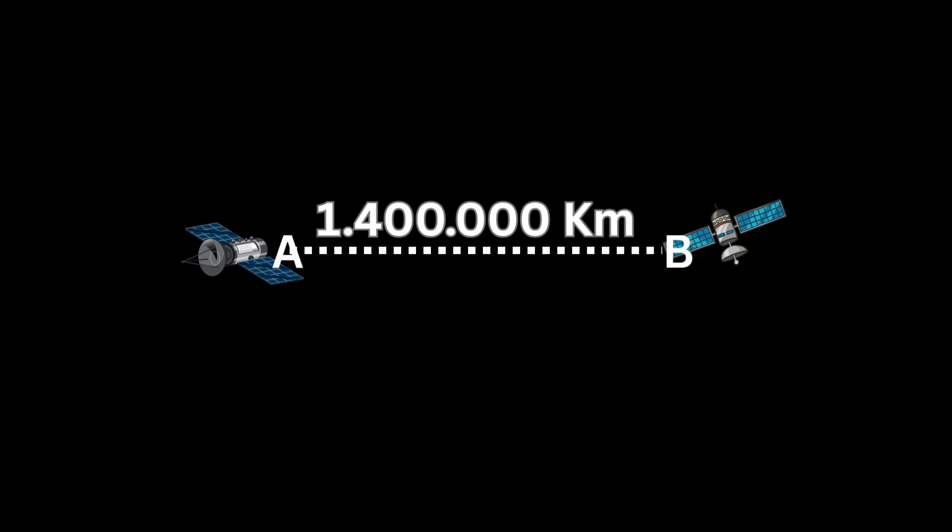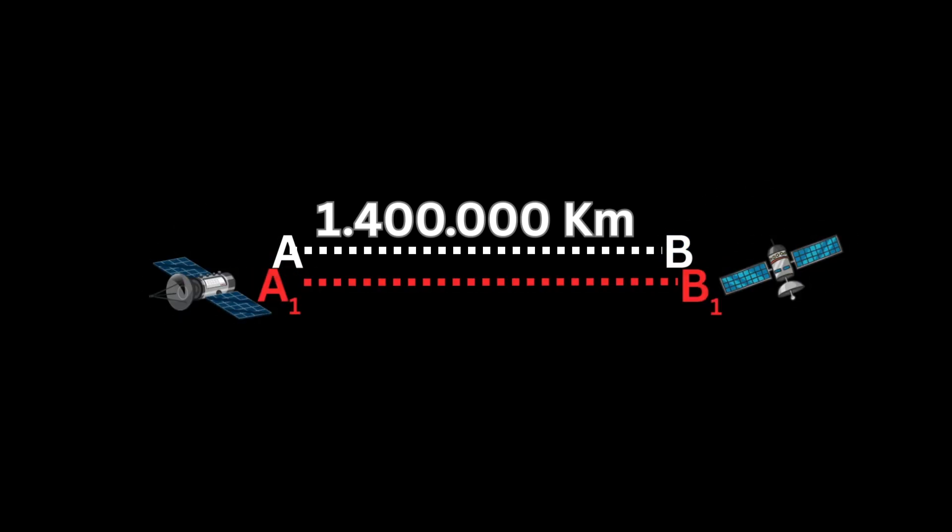Using this metric, physicists can calculate how space behaves near massive objects. According to those calculations, if the sun were to disappear, the distance between Parker and Soho would no longer be 1.4 million kilometers. It would become 1,400,000 and 1.63 kilometers.